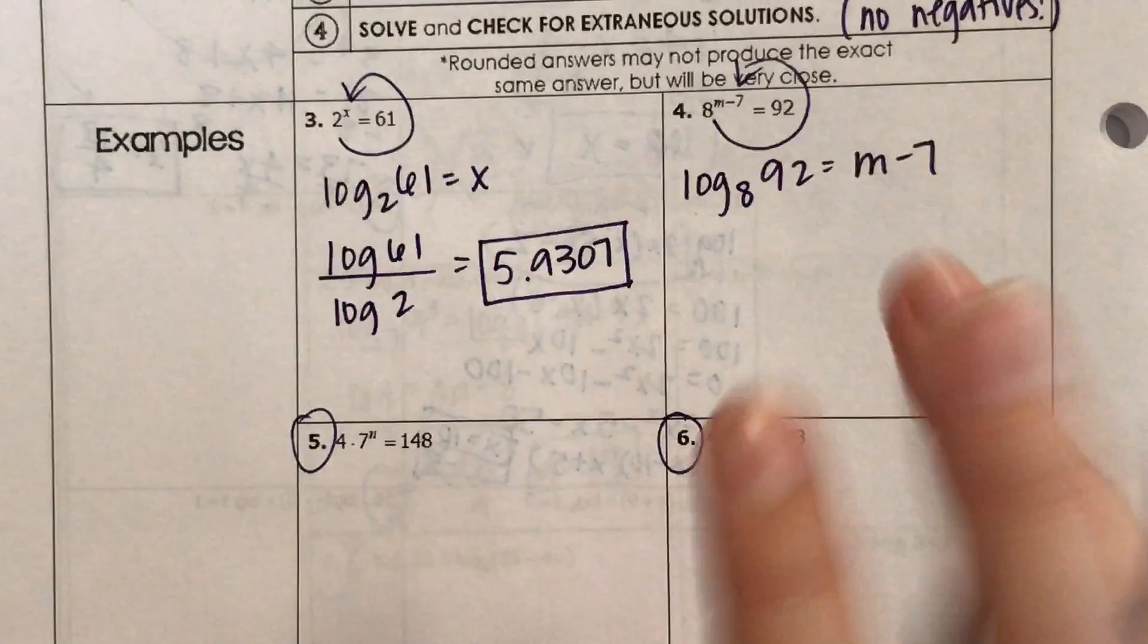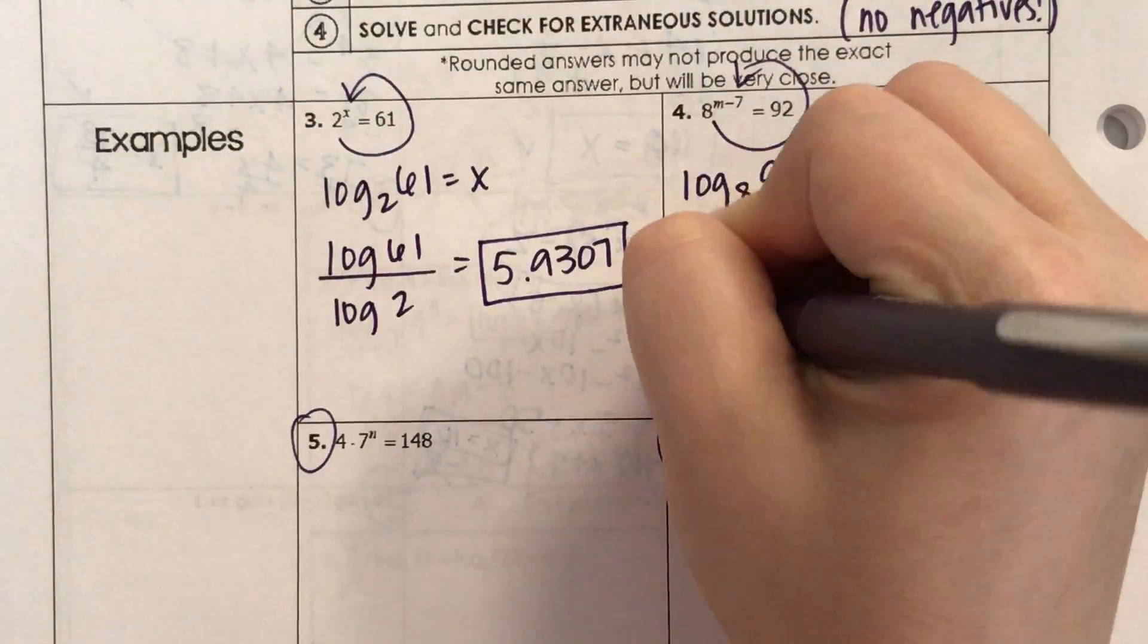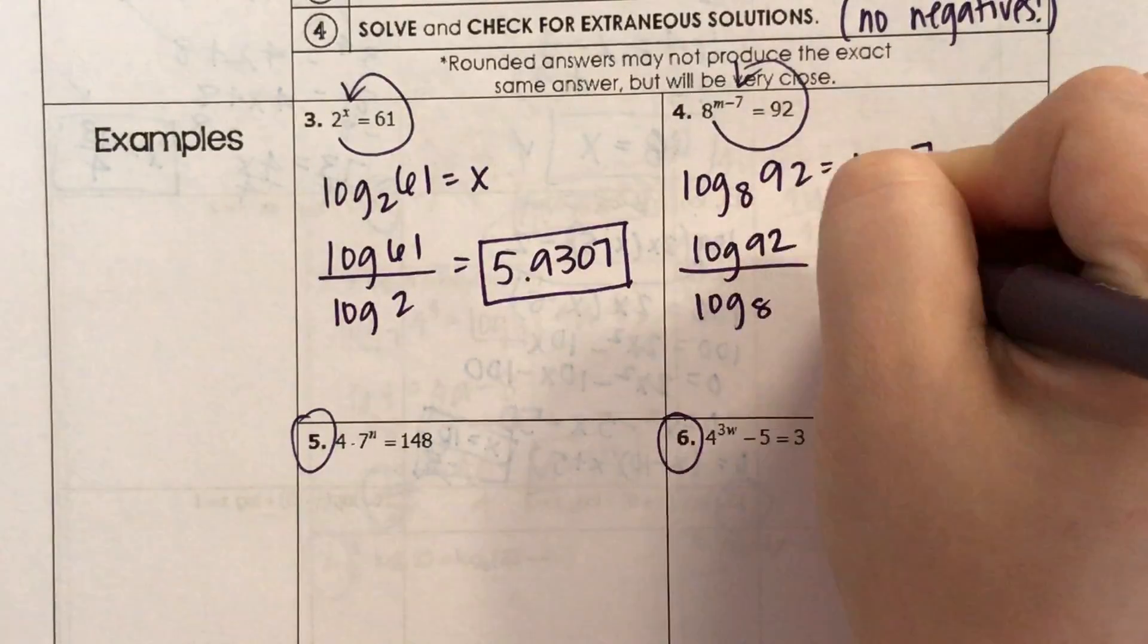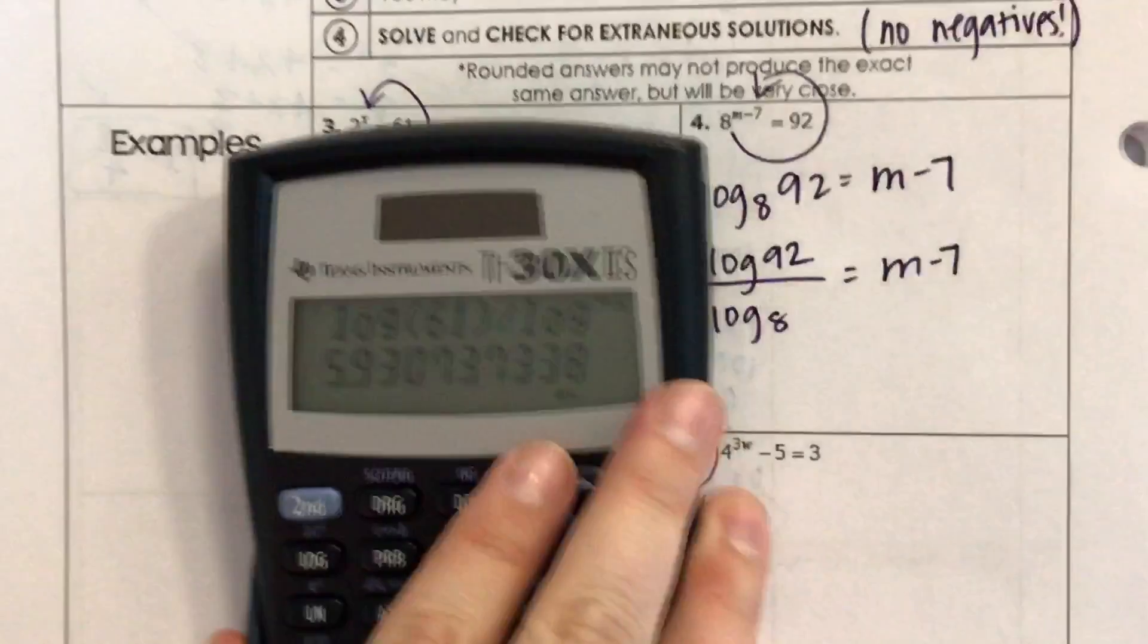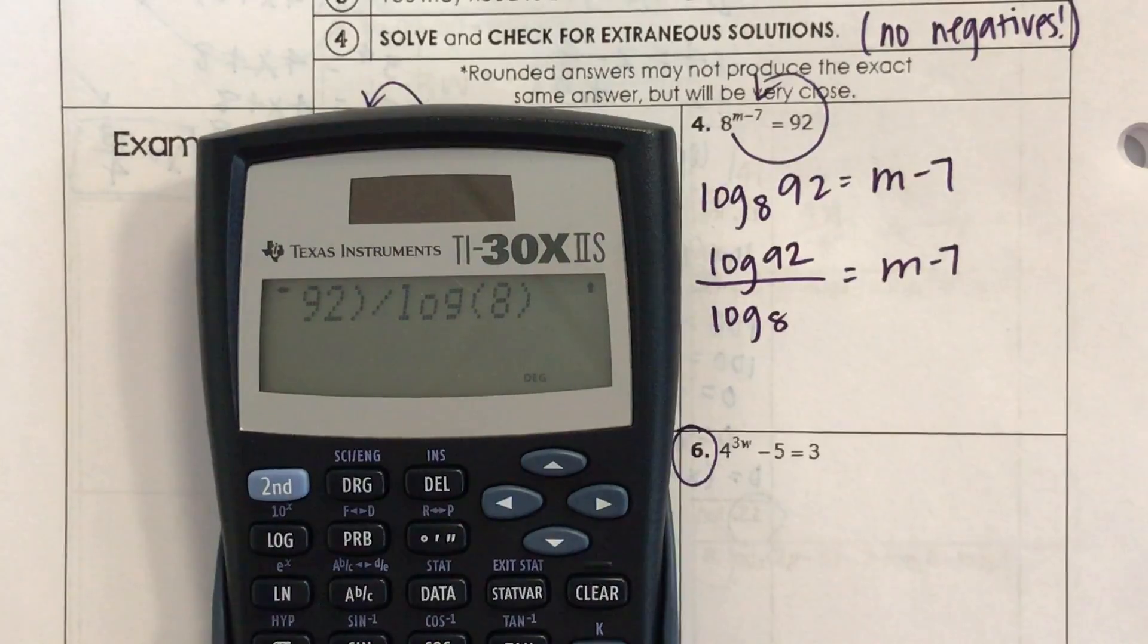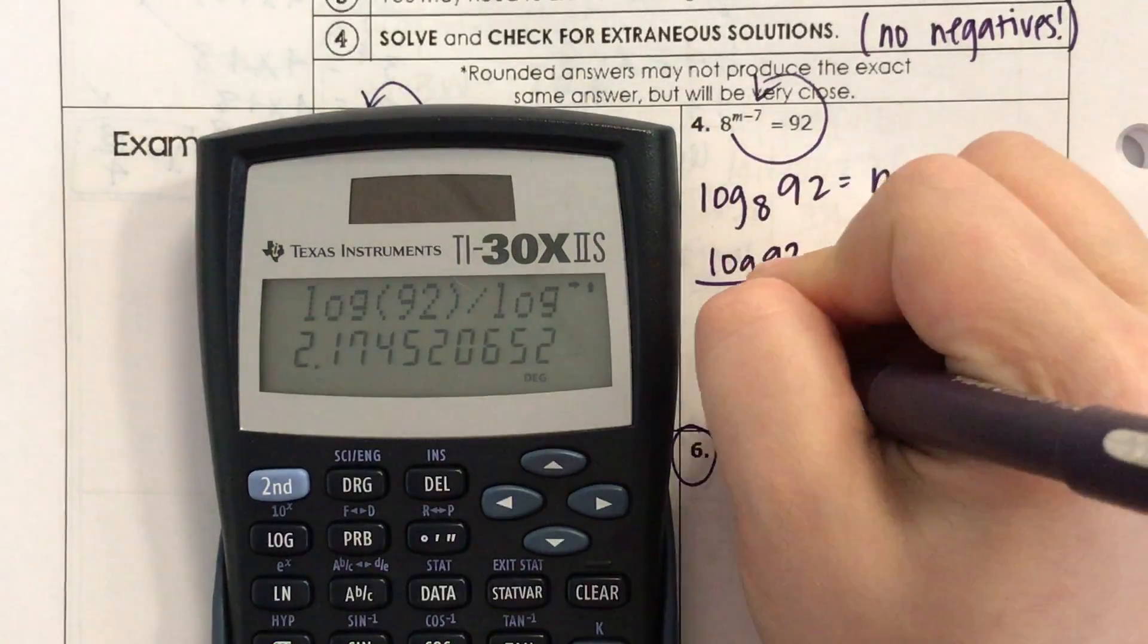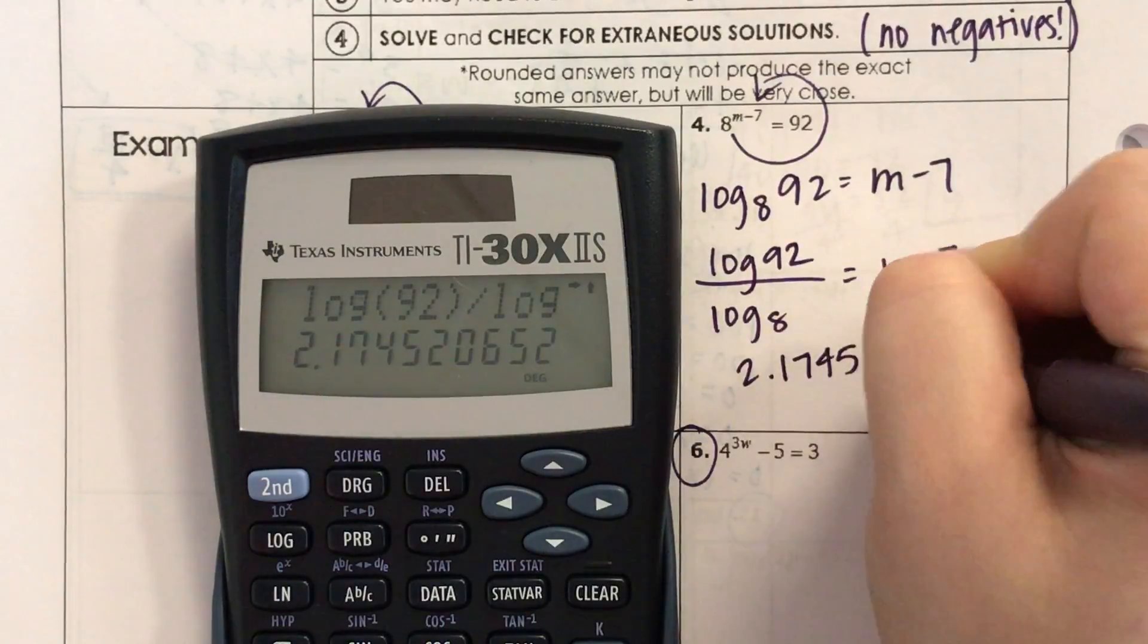Okay, let's use the same change of base formula. Log of 92 divided by log of 8, 2.1745 equals m minus 7.